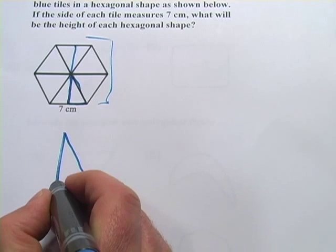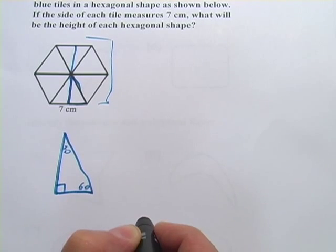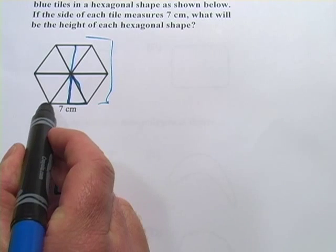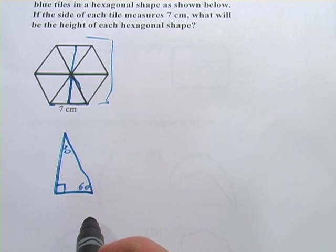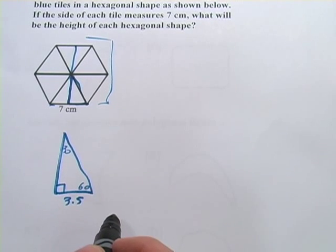And let me draw on what I know here. Here's my right angle. Here's my 30-degree angle. Here's my 60-degree angle. And the side of the equilateral triangle was 7. When I cut it in half, this side down here becomes 3.5.